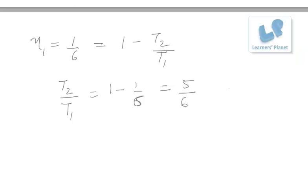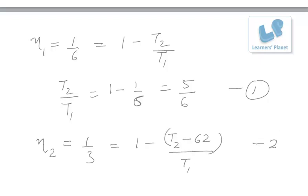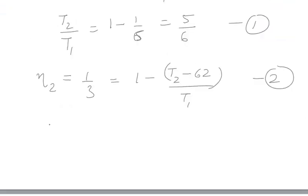In the second case, η2 = 1/3, but by that time the temperature T2 is reduced by 62 Kelvin. Solving these two equations: (T2 - 62)/T1 = 2/3.